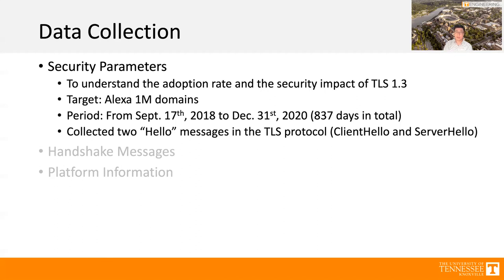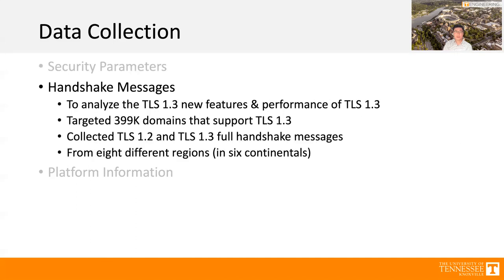The second dataset is handshake messages, collected to analyze TLS 1.3 new features and performance. We targeted only 399 domains that supported TLS 1.3, and collected TLS 1.2 and TLS 1.3 full handshake messages from eight different regions across six continents: North America, South America, Asia, Australia, Africa, and Europe.